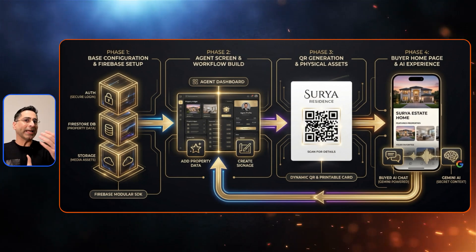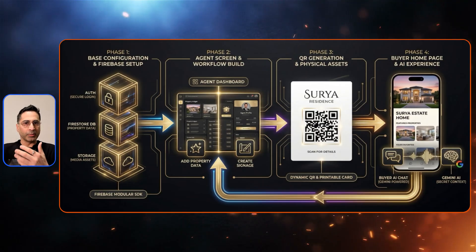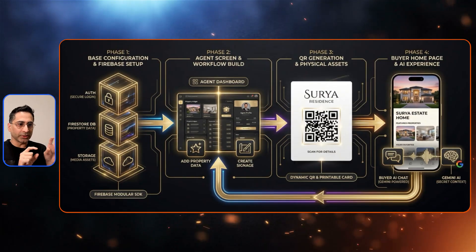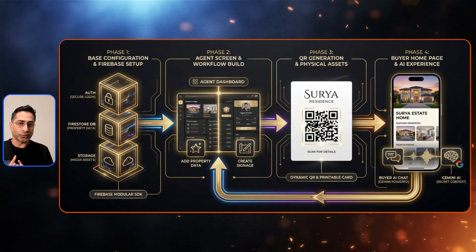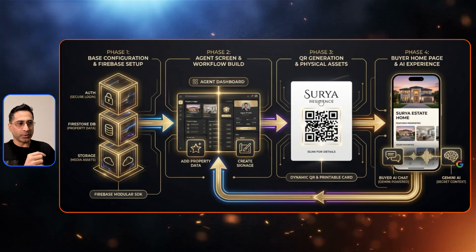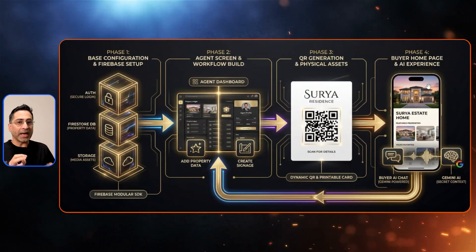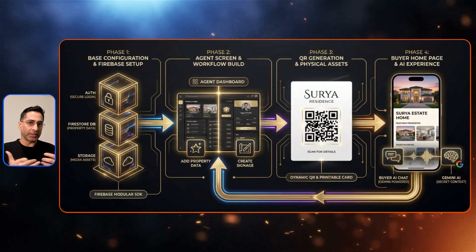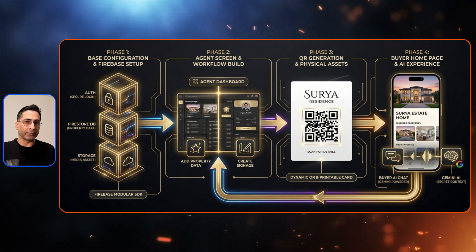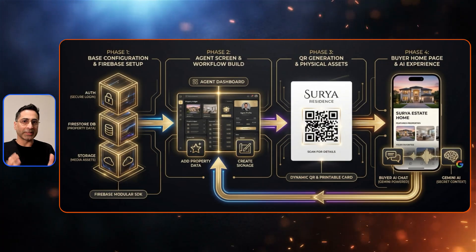In phase two, you build the agent persona first — the capability to add houses, then the capability to create QR code signage. Just ask Gemini 3 in AI Studio and it will create that for you. The last phase is creating the buyer persona: add a prompt specifying the public website experience and the AI chat personality for the house. That is the full end-to-end development flow.